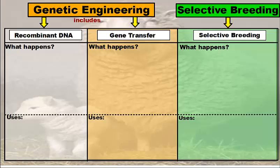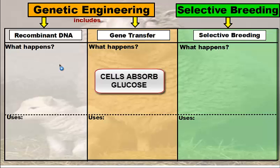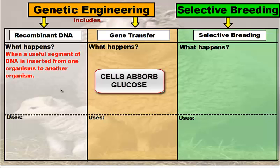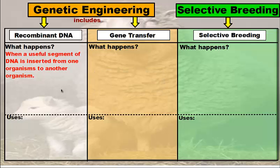Recombinant DNA is essentially what it sounds like — we're recombining DNA. A useful segment of DNA is inserted from one organism to another organism. Now, your textbook said from one organism to a bacterium, however we have taken genes from spiders that make silk and put them into the DNA of goats, so the goats make spider silk when they produce goat milk. Also, we've taken fluorescent color genes and placed them into fish to help with underwater cleanups. So we have taken genes from one organism and placed them into organisms other than bacteria. However, in this vodcast we will discuss how bacteria are used in recombinant DNA.